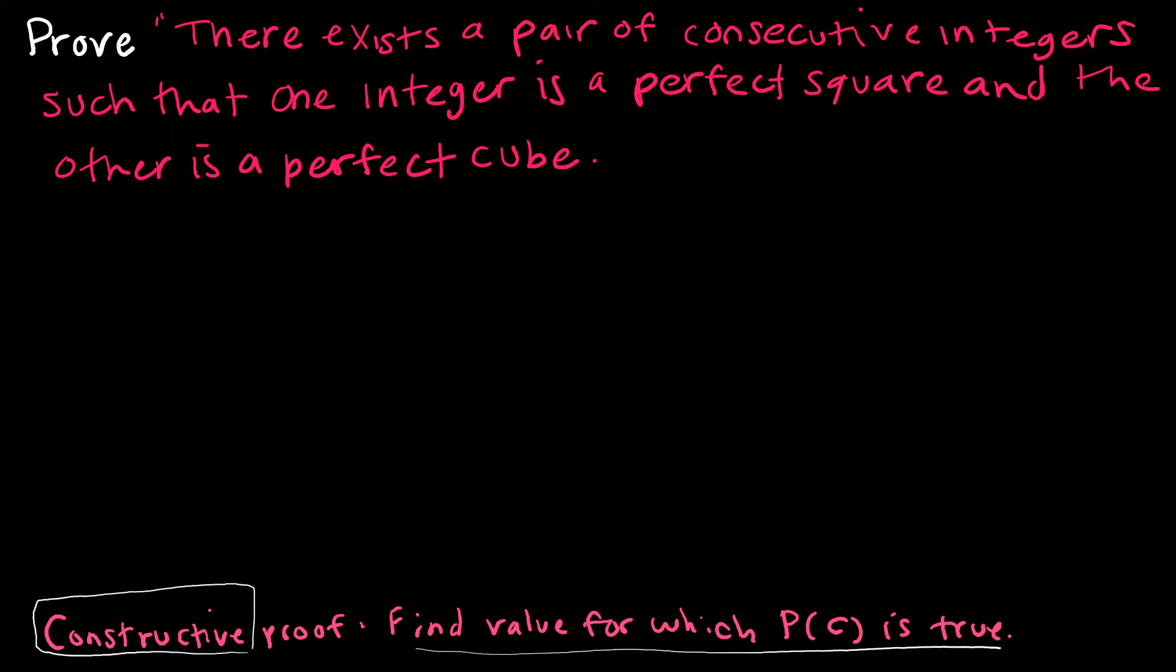It says there exists a pair of consecutive integers such that one integer is a perfect square and the other is a perfect cube.